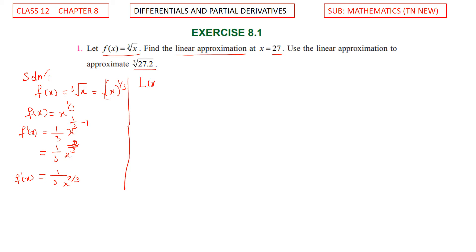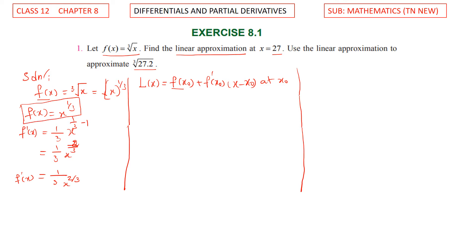L of x, the linear approximation formula, is: f of x₀ plus f dash of x₀ into x minus x₀. This is the linear approximation at x₀. Substituting: f of x₀ equals x₀ power 1 by 3, plus f dash of x₀, which is 1 by 3 into x₀ power 2 by 3, into x minus x₀.